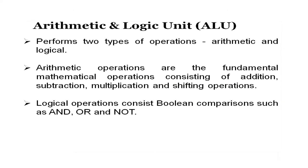The arithmetic and logic unit (ALU) performs two types of operations: arithmetic and logical. Arithmetic operations are the fundamental mathematical operations — addition, subtraction, multiplication, division, and shifting. Logical operations handle two or more instructions at one time using AND, OR, and NOT operators. The ALU helps us get the result from a particular instruction; which operators are used is decided by the ALU according to the instructions given by the user and interpreted by the control unit.